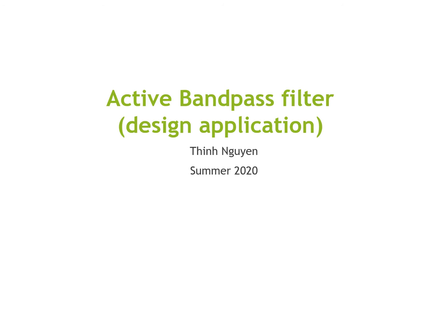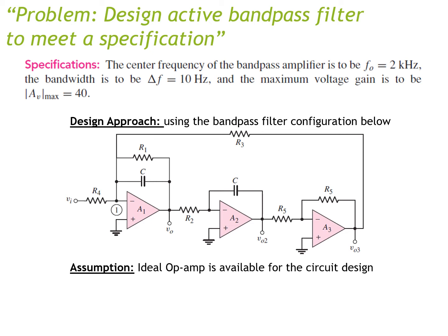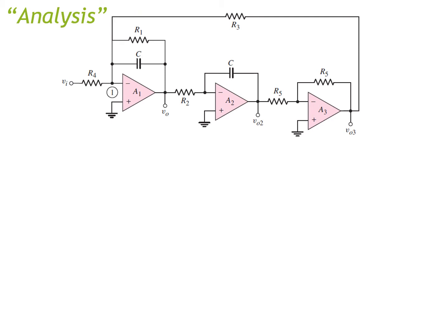It also has a bandwidth. Here's the problem from the textbook: design a bandpass amplifier with a center frequency at 2 kilohertz, a bandwidth of 10 hertz, and a maximum voltage gain of 40. Our approach is to use a three-stage bandpass filter configuration, with the assumption that all op-amps are ideal.